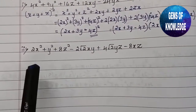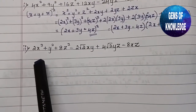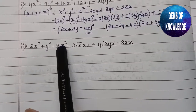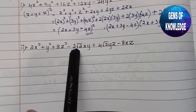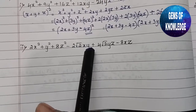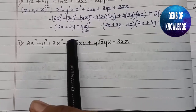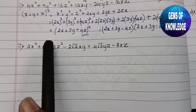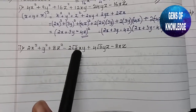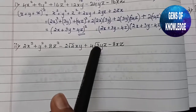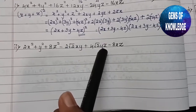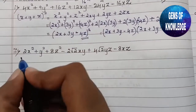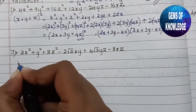Now moving to the second question. It is given in the same format: 2x² + y² + 8z² − 2√2 xy + 4√2 yz − 8xz. When you see √2 here, you need to identify that somewhere among the three terms there must be a √2 involved.